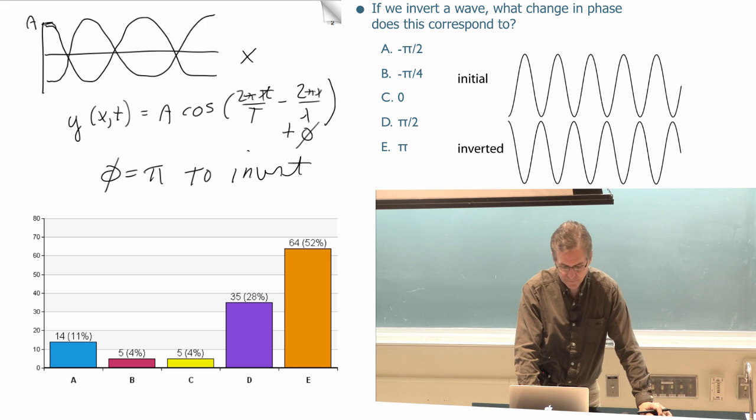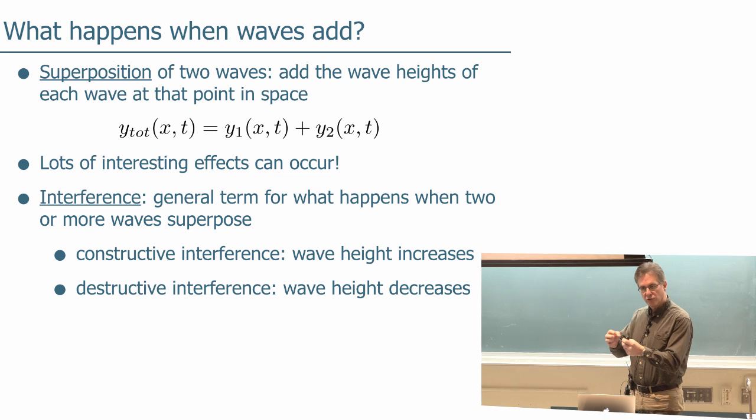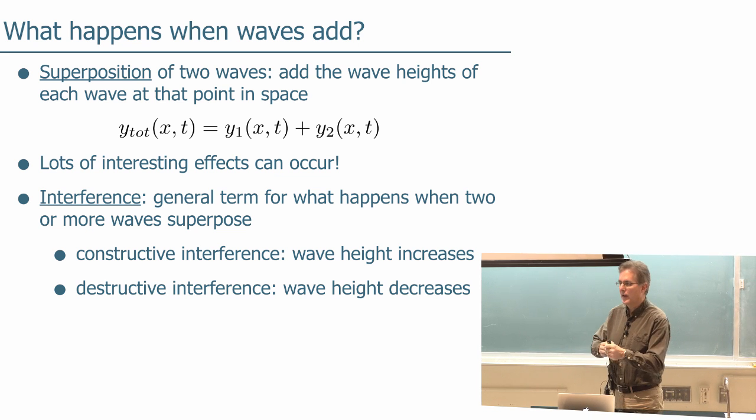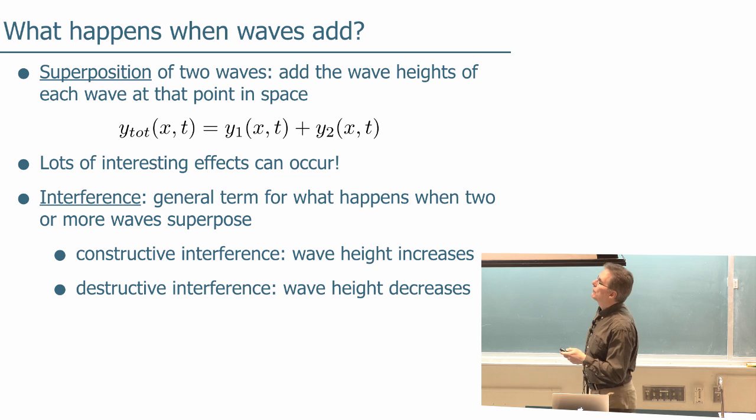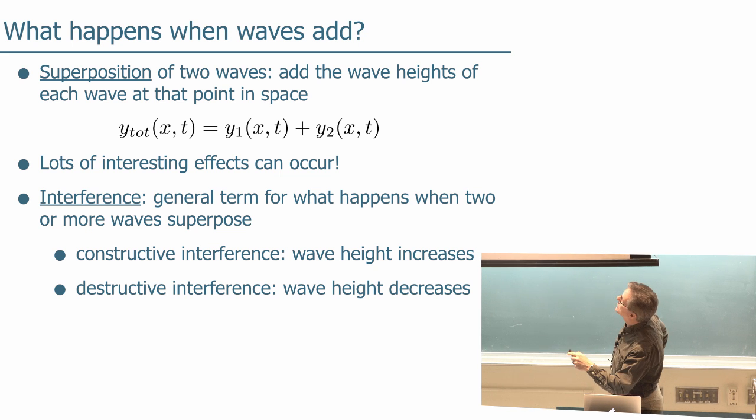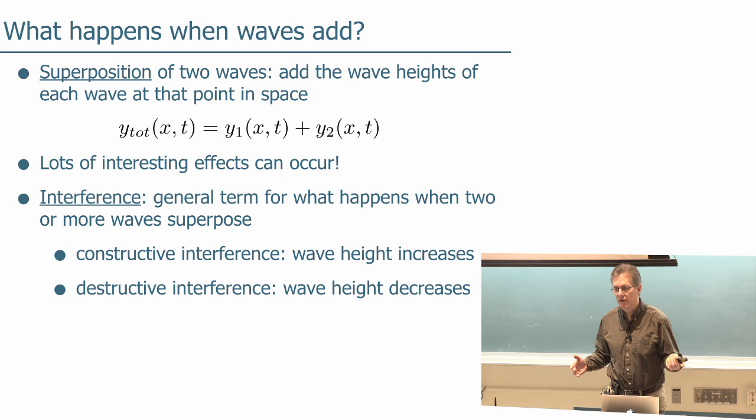Very good. Okay, why would we want to invert a wave at all? What happens when we add two waves? You can have two sources putting out waves of the same wavelength, the same frequency, but if they're out of phase they will add either constructively or destructively. We could rewrite the total y_total of x and t is y1 plus y2 of x and t and all sorts of interesting effects can occur.